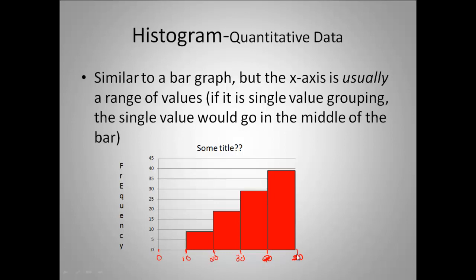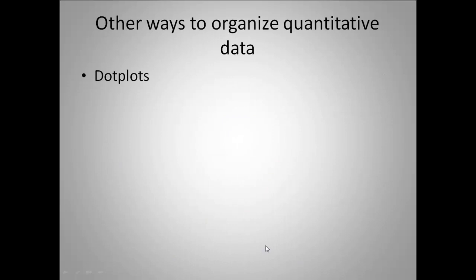If you have single value grouping and you use a histogram, the single value would go in the middle of the bar. So maybe this is having 1, 2, 3, or 4, 5.